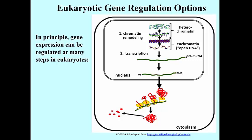Then of course we have transcription, and we make a pre-messenger RNA, and we have different kinds of transcript processing. Here we have pictured mRNA processing, which of course involves splicing, 5' end capping, and 3' end addition of a poly-A tail. Those are discrete steps, any one of which, in theory at least, is subject to controls.